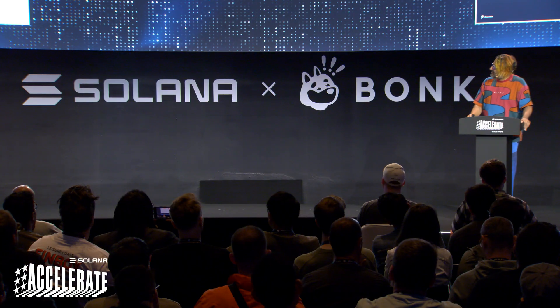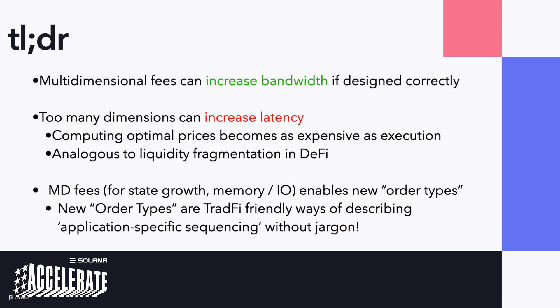To wrap up, there are three takeaways. First, multidimensional fees can increase throughput and bandwidth in a network, but if you have too many dimensions, you increase latency — so there's a constraint when the goal is to reduce latency and increase bandwidth. Second, for TradFi or Web2 people, these complicated fee models are essentially a way of enforcing order types — custom order types that rely on relative ordering. And that seems like something people really want to do. Thank you.